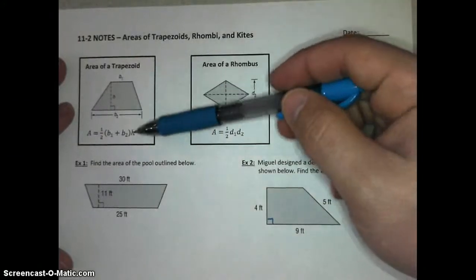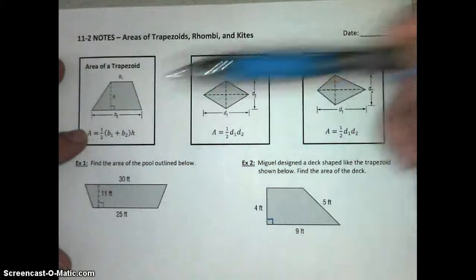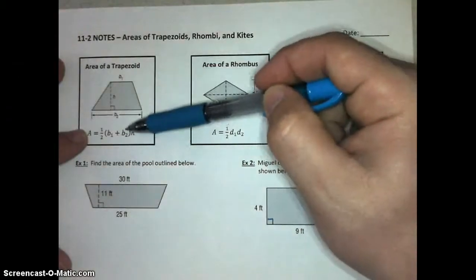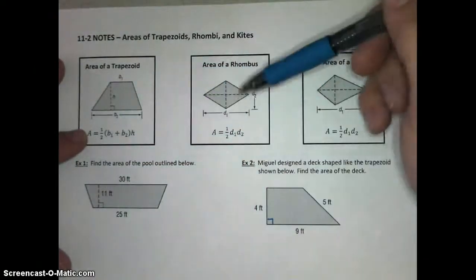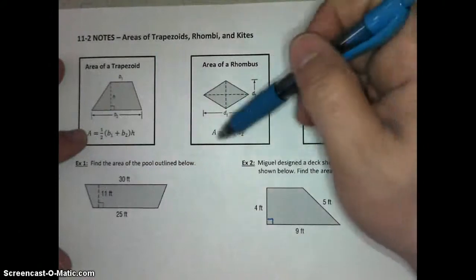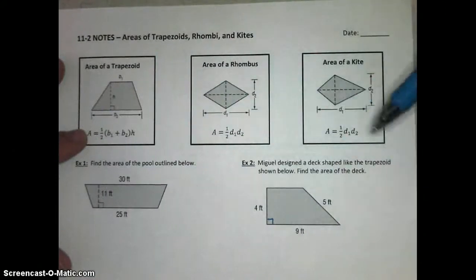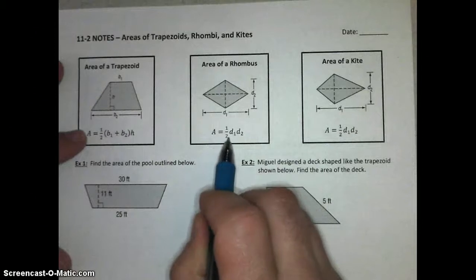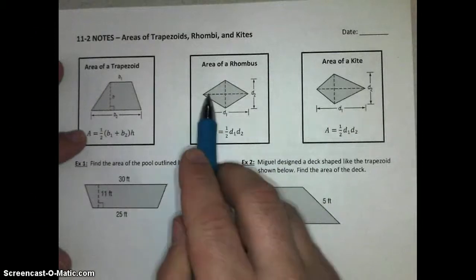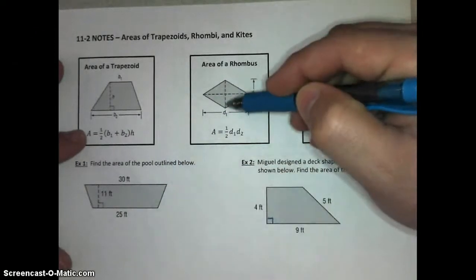We have the area of a trapezoid formula, 1 half the sum of the bases times the height, base 1 plus base 2. We want to basically find the average base times the height. The area of a rhombus uses this formula: half of diagonal 1 times diagonal 2. We use the diagonals of a rhombus to calculate area this way.